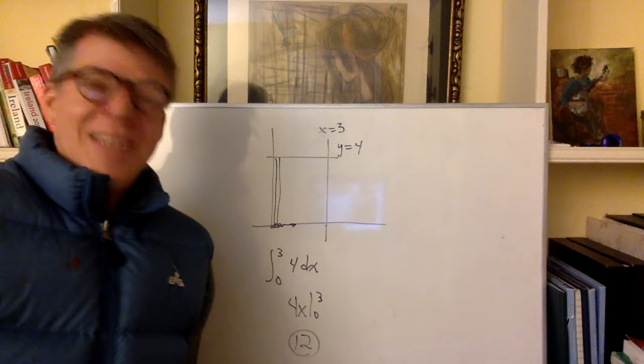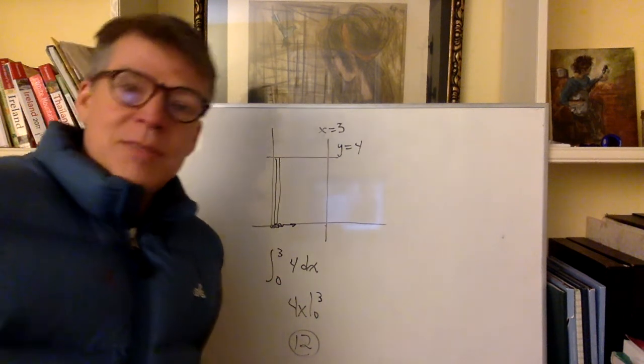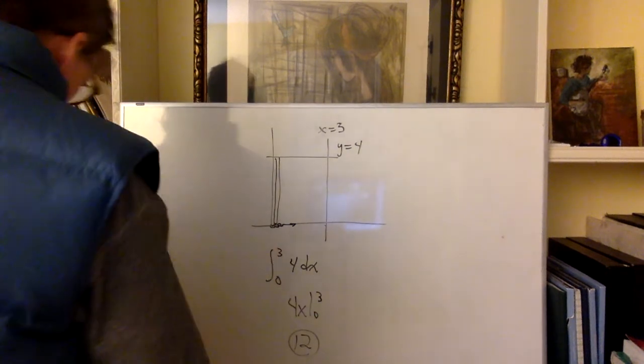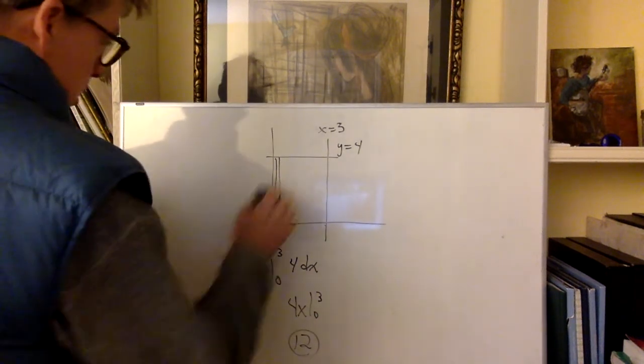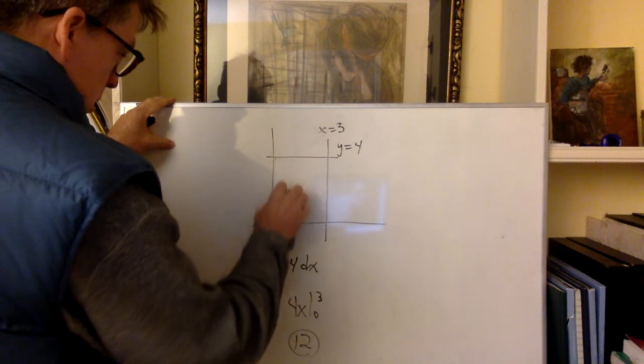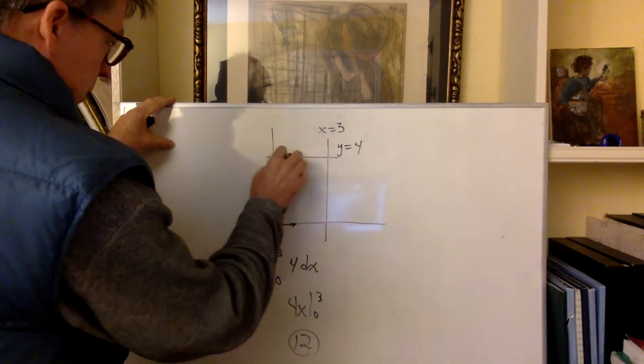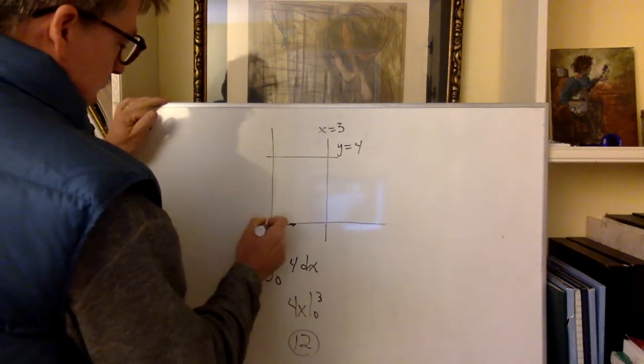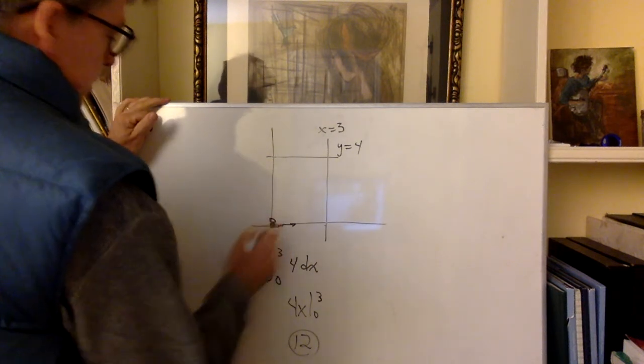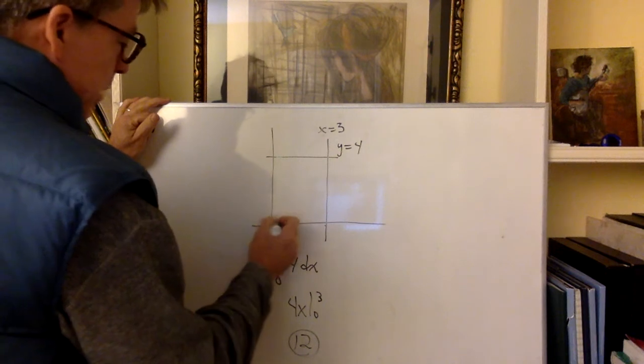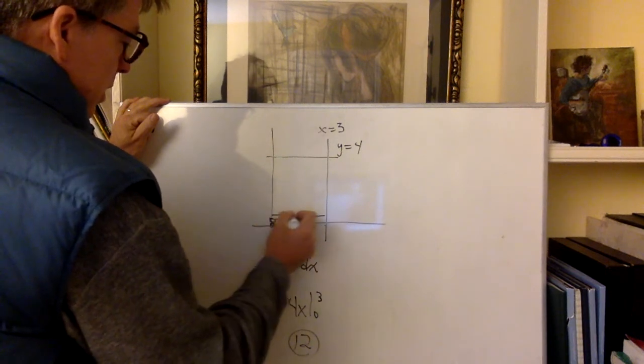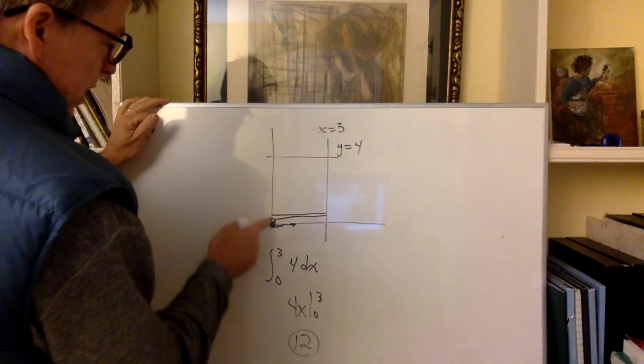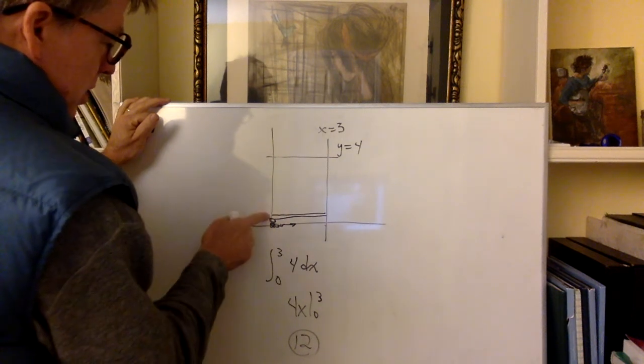Take the antiderivative, 4x. Plug in top minus plug in the bottom, and yay, calculus works. We get 12. So can you folks pause the video and see if you can set up the integral for if the caterpillar was crawling up the y-axis, what would be different about this integral? So go ahead, pause, see if you can get it.